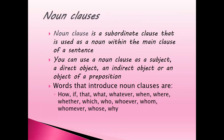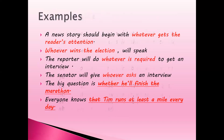The last type is the noun clause. A noun clause is a subordinate clause that is used as a noun within the main clause of a sentence. You can use a noun clause as a subject, direct object, or object of a preposition — same as the function of a noun in general. Words that introduce noun clauses include: how, if, that, wherever, whoever, where, whether, which, whomever, whose, why. Examples: 'A news story should begin with whatever gets the reader's attention.' 'Whoever wins the election will speak.' 'The reporter will do whatever is required.'